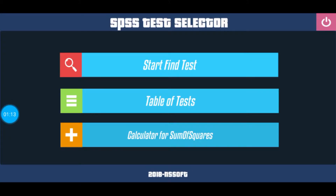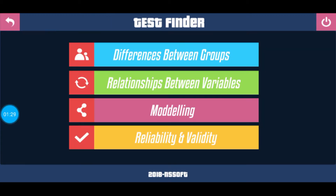After the application is opened, the first option here is Start Find Test. The second one is the Table of Tests. The third is the Calculator for Sum of Squares. So now let's begin with the first option, Start Find Test.